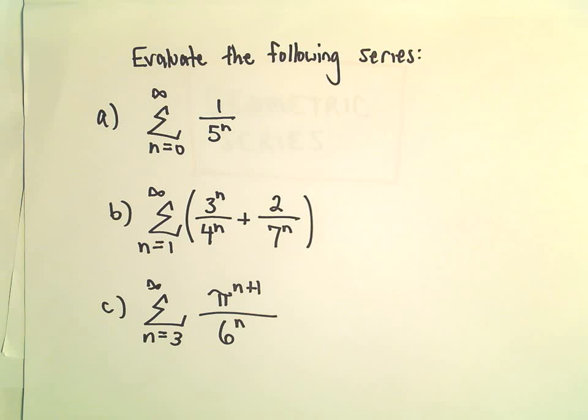So in part A here we've got the series from n equals 0 to infinity of 1 over 5 to the n.